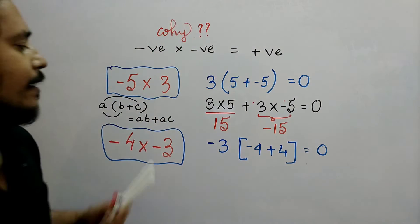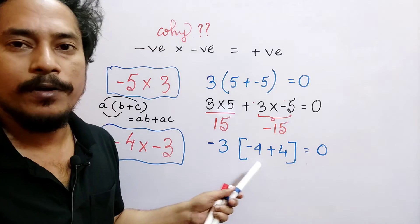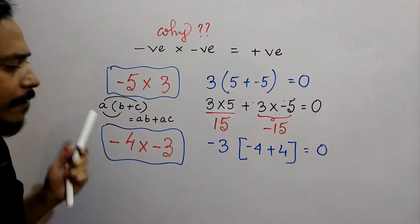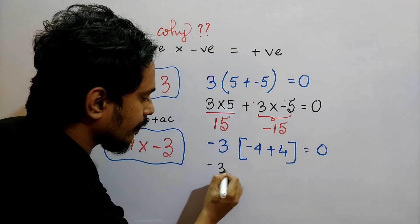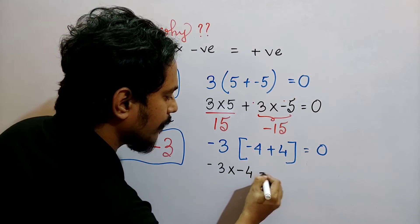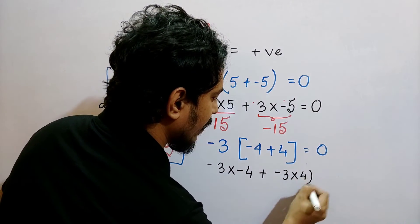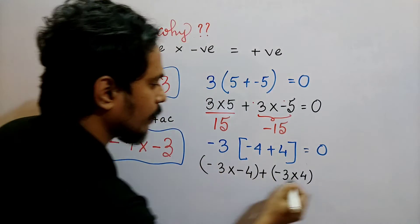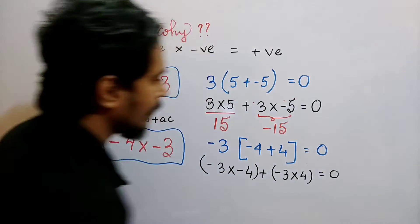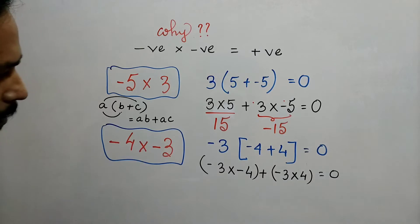We can again apply distributive property over here. The distributive property is minus 3 into minus 4 multiplied plus minus 3 into 4 multiplied.